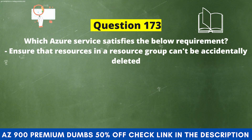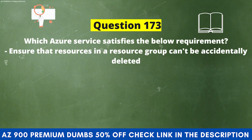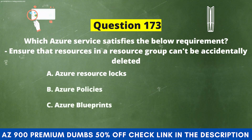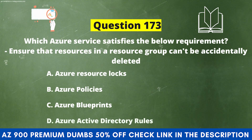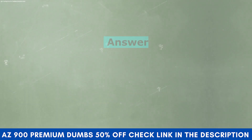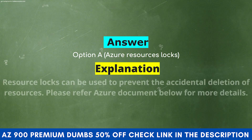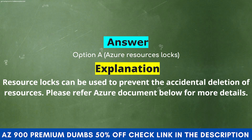Which Azure service satisfies the below requirement: ensure that resources in a resource group can't be accidentally deleted? Option A: Azure Resource Logs. Option B: Azure Policies. Option C: Azure Blueprints. Option D: Azure Active Directory Rules. The correct answer is Option A, Azure Resource Logs. Resource Logs can be used to prevent the accidental deletion of resources. Please refer to the Azure document below for more details.